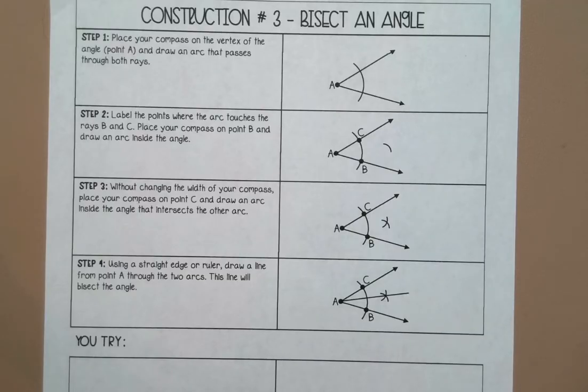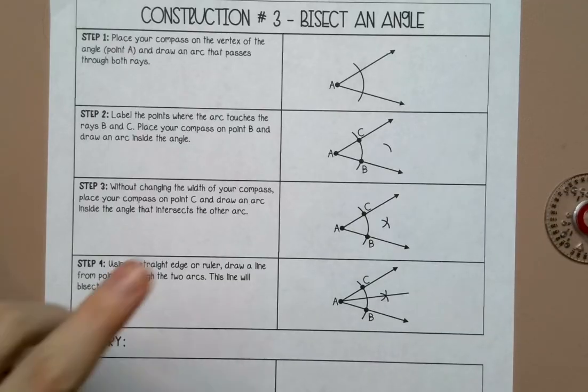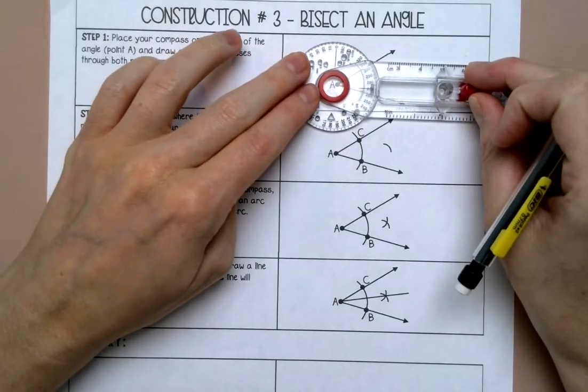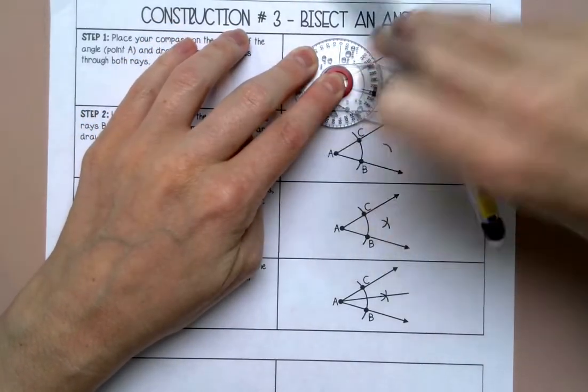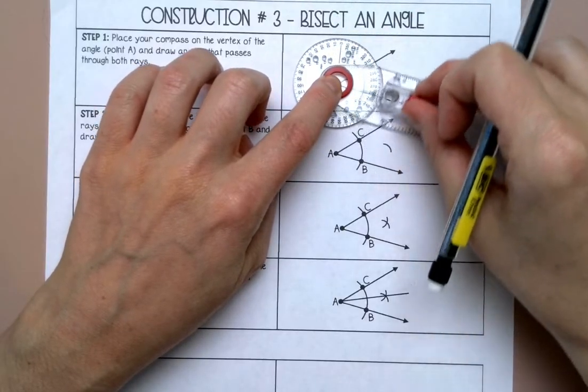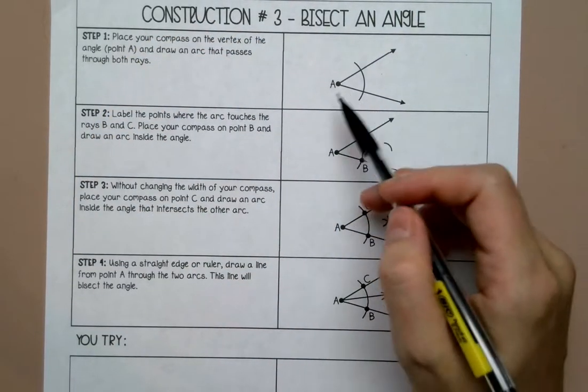So the first thing I'm going to do is put my compass on the vertex of the angle that I was given and I'm going to slide my compass in and make an arc that goes through both line segments or rays.